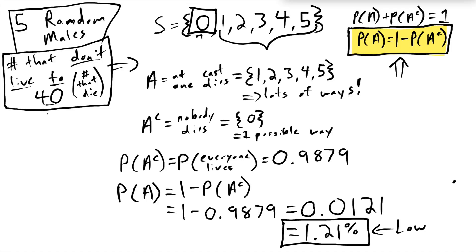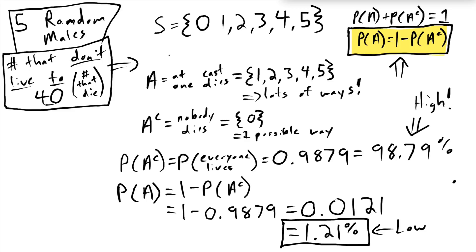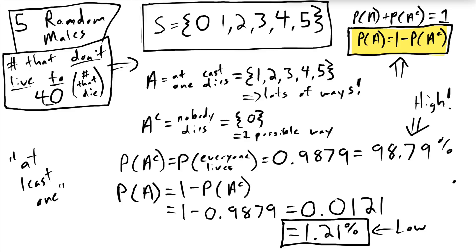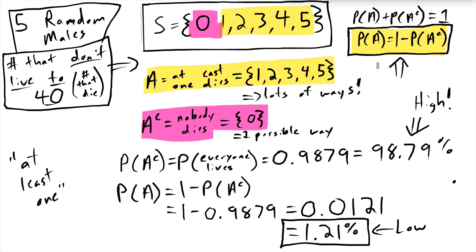There's a low probability that at least one of a group of five 40-year-olds dies, because there's a high probability they all make it. 'At least one' is a keyword phrase — when you see it, use the complement rule. If you get confused, write out all possible outcomes: at least one of something means many outcomes, but the complement is only one possible outcome. I hope you found this video helpful — thanks for watching!